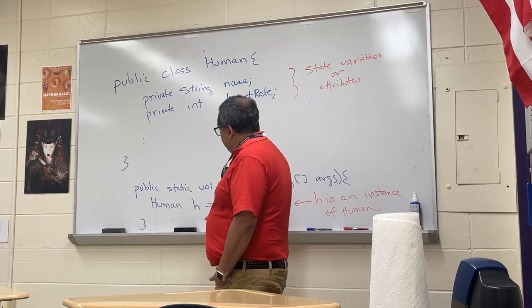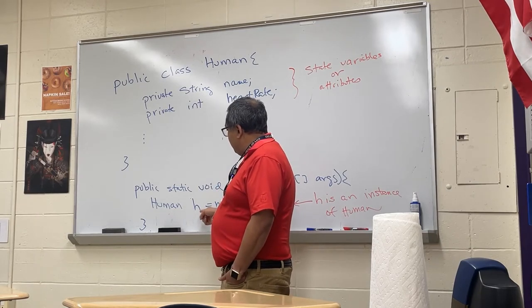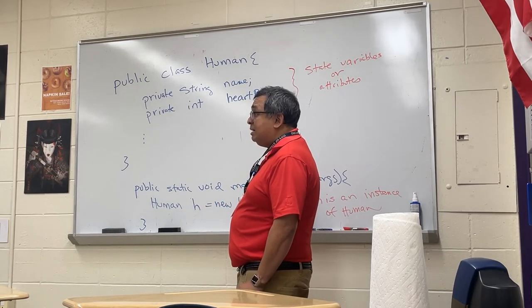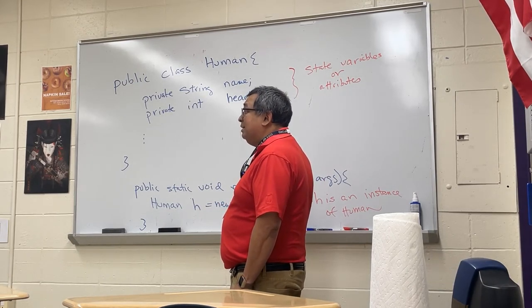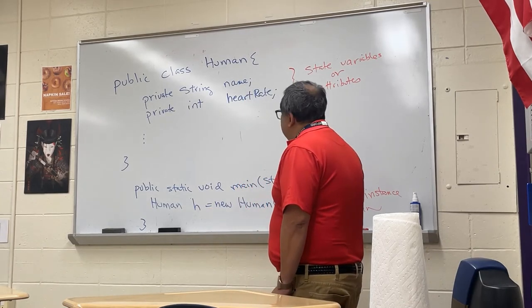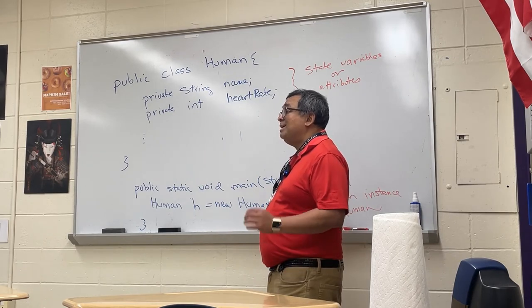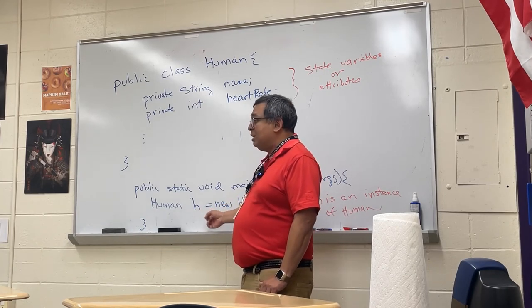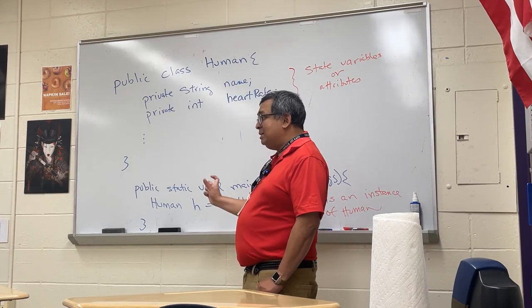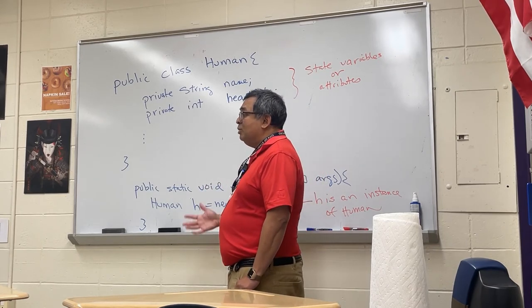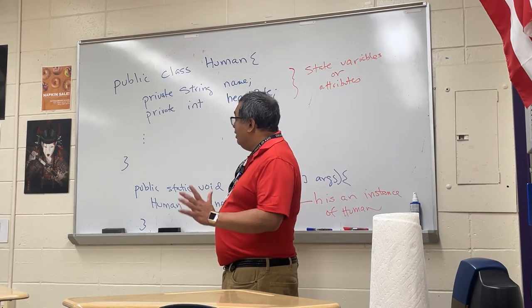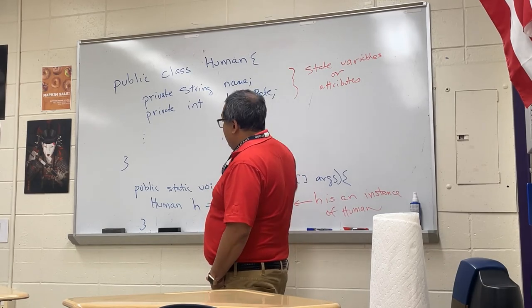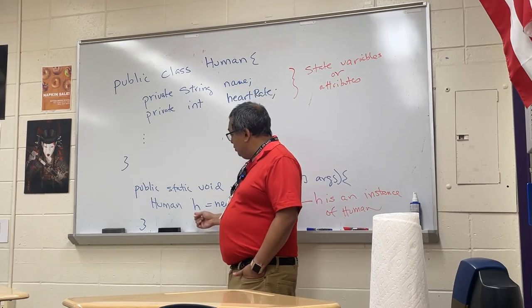Down here you can see I've created this human object, h. I've been referring to h as an object of the class human, and that is correct. However, the College Board refers to it slightly differently — they say that h is an instance of the human class. So h is an instance of the human class, and h is also an object of class human. Those are the two different ways to describe it. The word "instance" is going to be used on your quizzes, your tests, and on your AP exam. So two words you want to walk away with today: one is "attribute," which means a state variable of the class, and the other is "instance" of a class, which is another word for object.